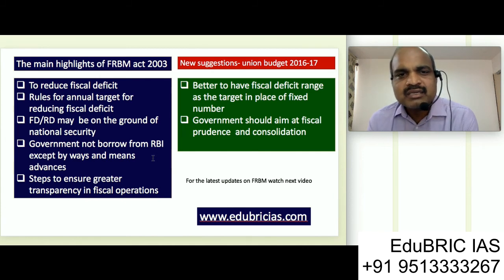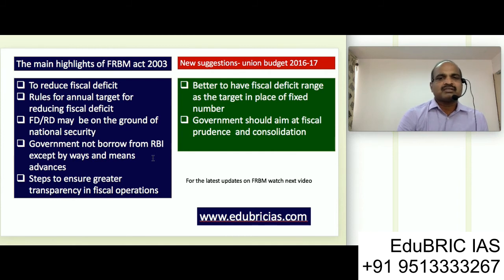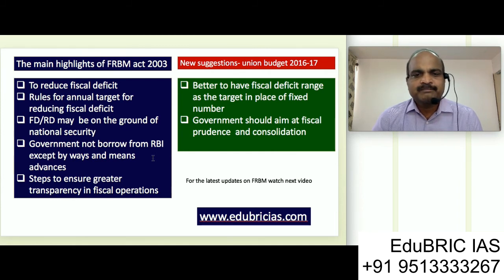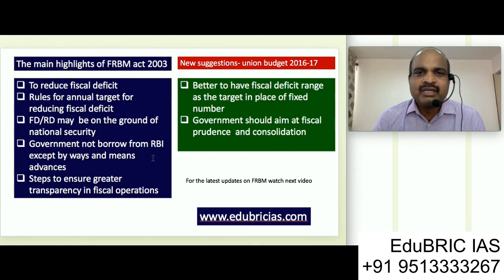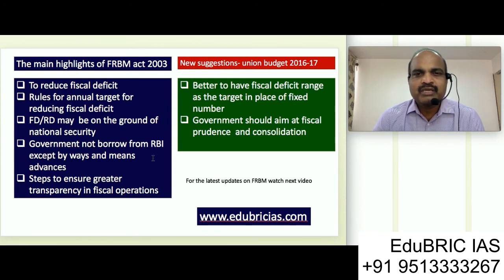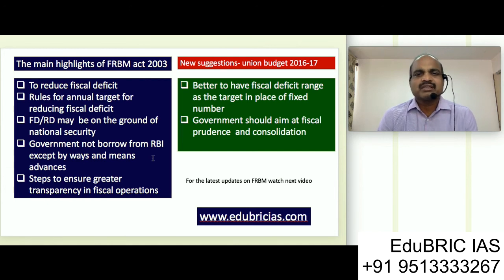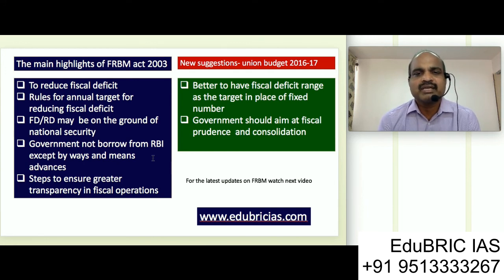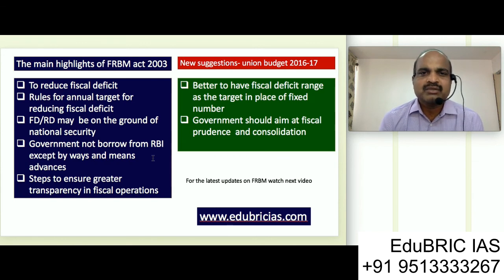In 2016 and 2017, the union budget finance minister came up with new suggestions on the FRBM. Earlier, the FRBM Act of 2003 had set a standard and target saying revenue deficit should be reduced every year by 0.5% and fiscal deficit by 0.3%. The government has now recommended it is better to have a fiscal deficit range instead of a fixed number. The government is aiming at more consolidation, and when we use the words 'fiscal prudence and consolidation,' the government is particular about where money is being spent, whether outcomes are there, and whether every expenditure has been disclosed.